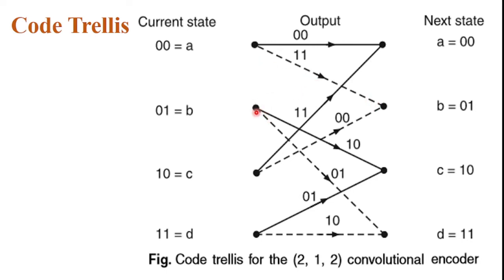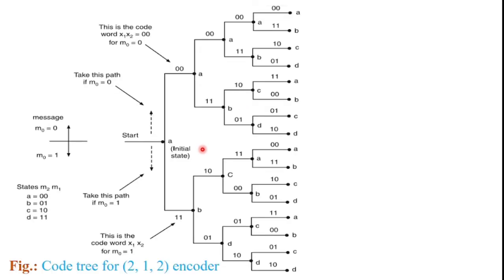The second state is B equal to 01. For state 01, the outputs are 10 and 01. The output 10 corresponds to message bit M0 is equal to 0, represented by the solid line, and the output 01 corresponds to message bit M0 is equal to 1, represented by the dashed line.